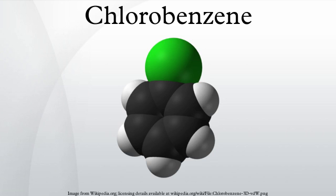Chlorobenzene was first described in 1851. It is manufactured by chlorination of benzene in the presence of a catalytic amount of a Lewis acid such as ferric chloride, sulfur dichloride, and anhydrous aluminium chloride.